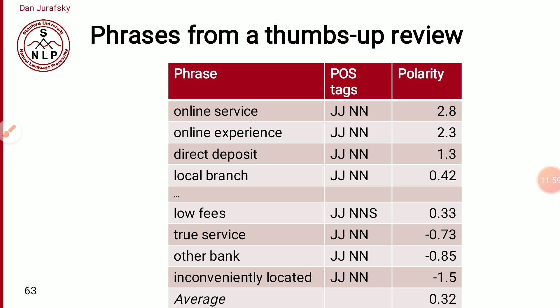Looking at results from Turney's algorithm on thumbs-up (positive) reviews, we can see phrases like 'online service' — JJ followed by noun — with a polarity of 2.8, and 'online experience' — adjective followed by noun — with a polarity of 2.3. Another phrase 'conveniently located' was also adjective followed by noun and assigned a positive polarity.